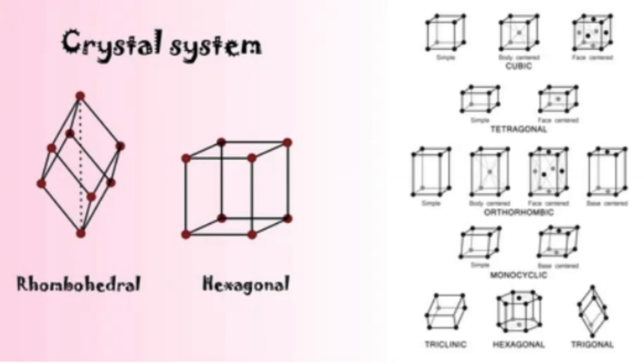There are seven main crystal systems, each defined by specific geometric properties and symmetry elements.